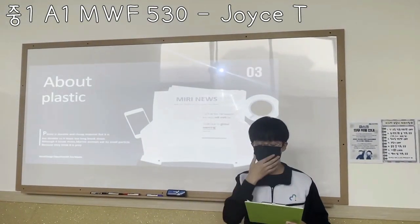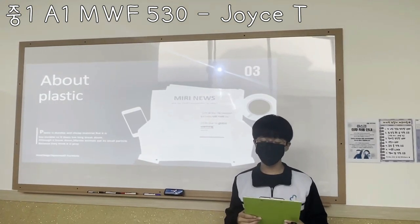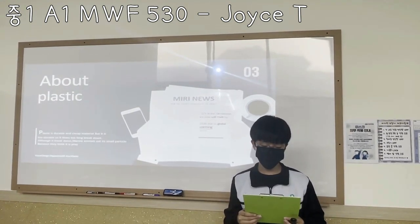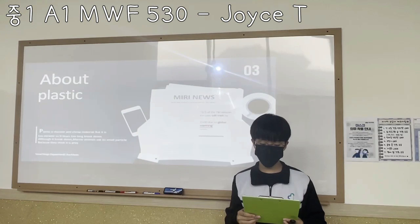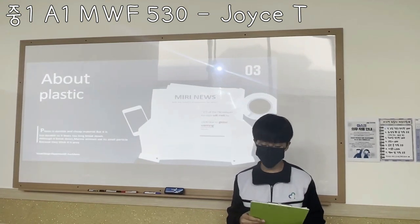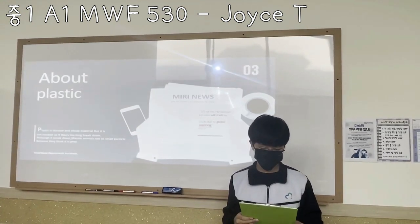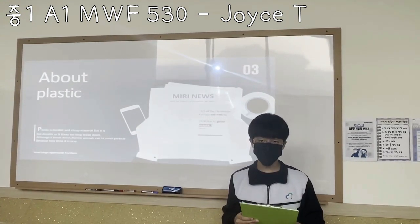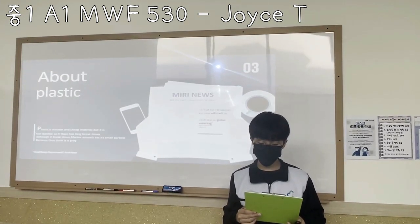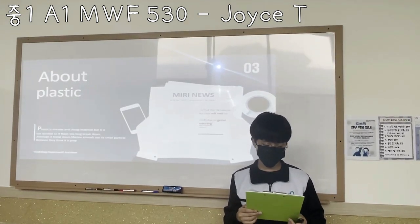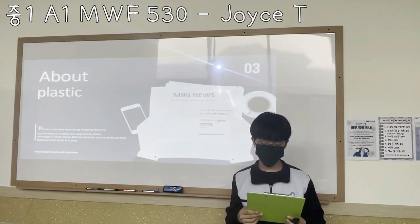About plastic: Plastic is a durable and cheap material, but it is too durable, so it takes too long to break down. When it breaks down into small particles, animals eat them because they mistake them for food.